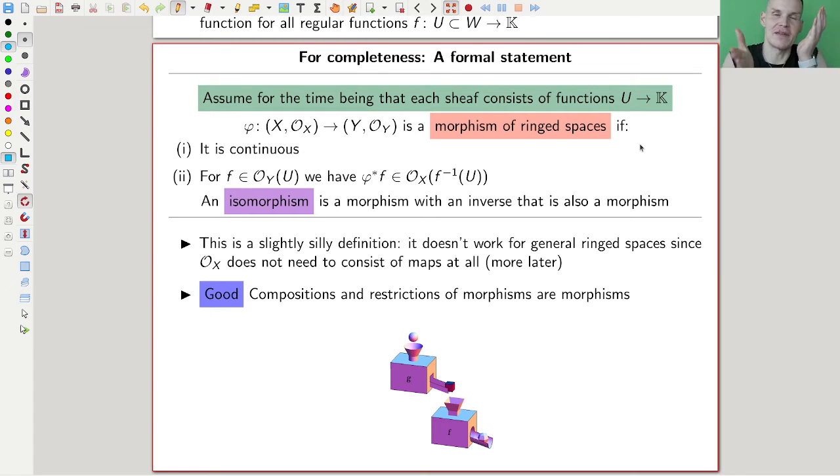It is the following, well, you have some structure, you have a topological space, right? X and Y. So the map is continuous, fine, that's what you would do anyway. But more importantly, or kind of the key player here is this condition that we had. So if you have something in one of the sheaves, then the pullback is also in one of the sheaves.